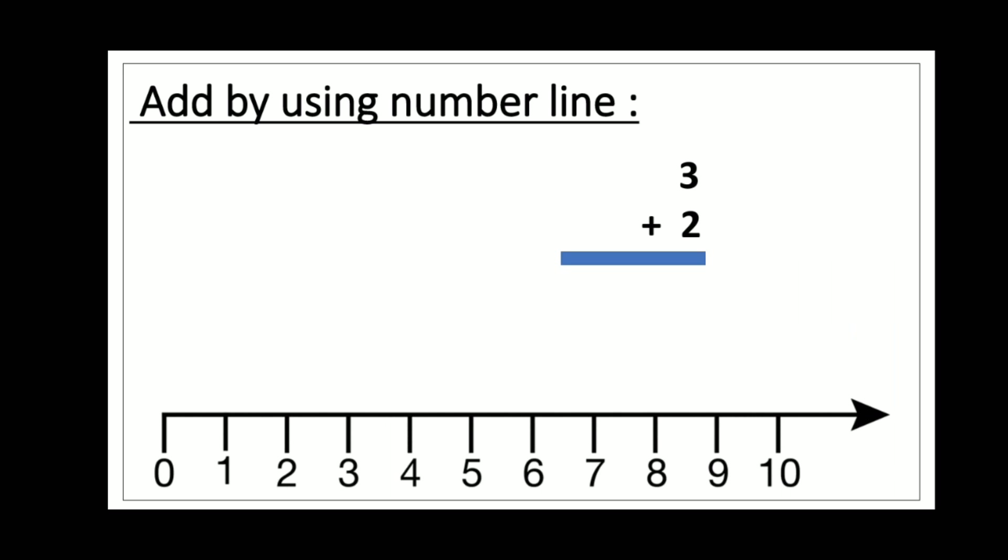Add by using a number line. How can we add the number by using number line? Here you can see the first number is three and the second number is two. Let's start from number three and add two. It will be number five. So three plus two is equal to five.